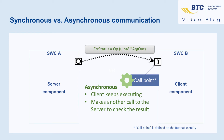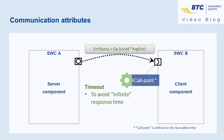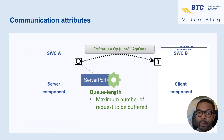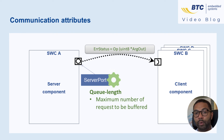In both cases, a timeout attribute can be defined to return an error if the server takes too long to respond. Finally, because multiple clients can call one server, the server can define a QLens attribute as the maximum number of requests to be buffered, over which the RTE will return a timeout error.